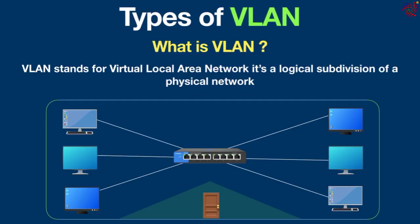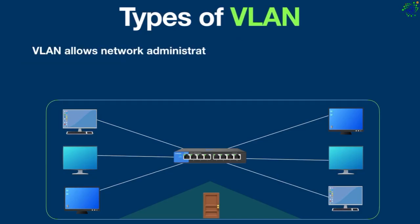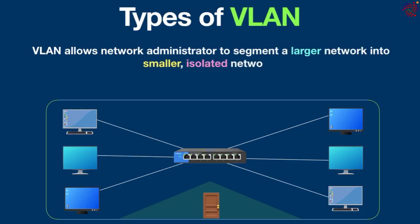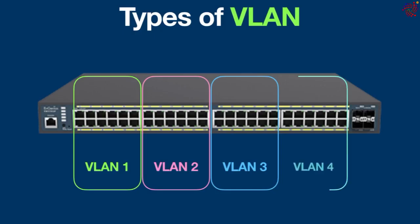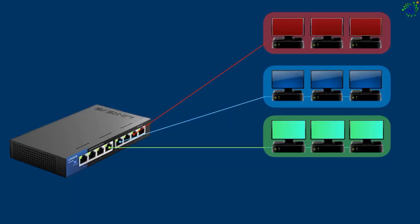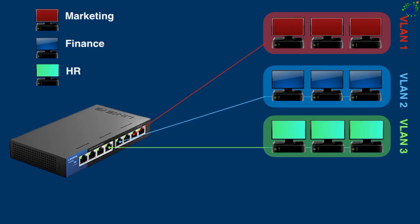This is where the purpose of VLAN becomes apparent. VLAN allows a network administrator to segment a larger network into smaller isolated networks without requiring additional hardware or physical cabling. VLANs are created on a switch by selecting specific ports and assigning those ports to a specific VLAN. Each VLAN functions as a separate network within the same physical infrastructure. For example, a company might have different VLANs for its marketing, finance, and human resource departments. This separation means that devices on one VLAN cannot directly communicate with devices on another VLAN, creating a more organized and secure environment.